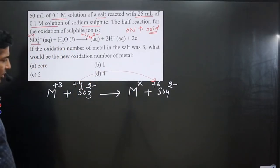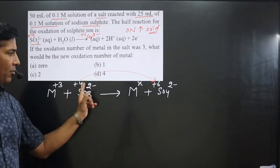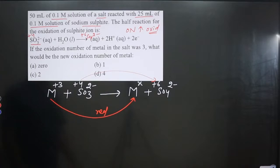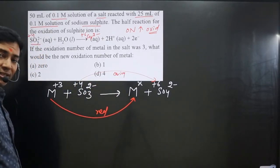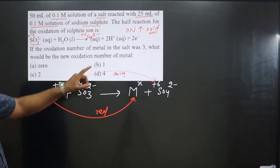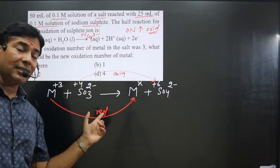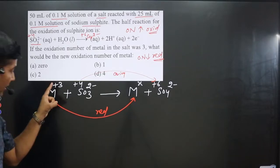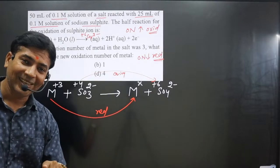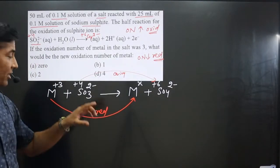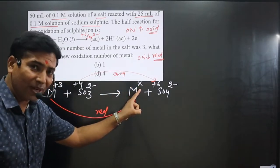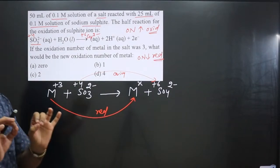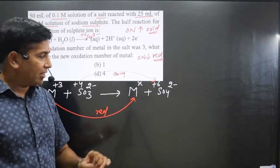Sulfite ion is undergoing oxidation because there is an increase in oxidation number. Therefore, the metal must undergo a reduction reaction. Decrease in oxidation number is always a reduction reaction. This means the +3 oxidation number of the metal is supposed to decrease — so the x value must be less than 3.